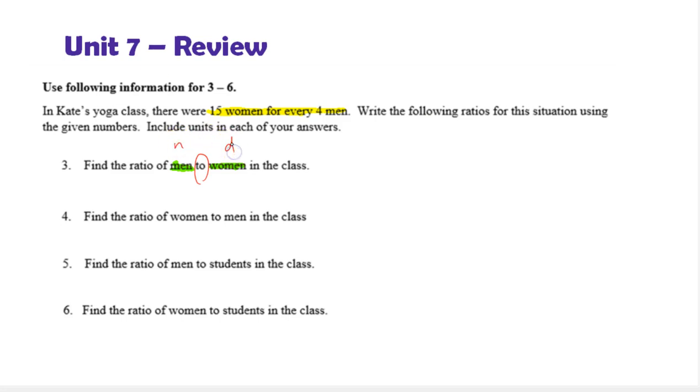So, this ratio would be 4 men to 15 women. Now, we're asked to find the ratio of women to men. So, notice this is just reversing the direction. And for many different reasons and application problems, we're going to want these in different orders. So, this would be 15 women to 4 men.